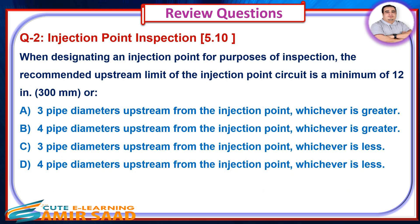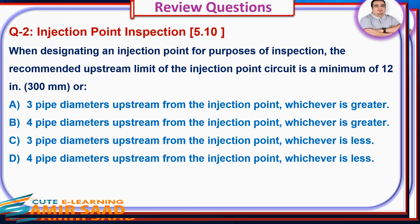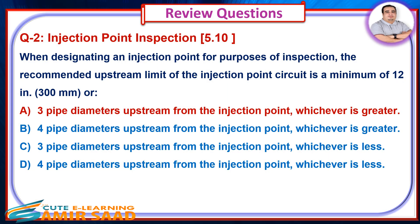Review Question 2: When designating an injection point for purposes of inspection, the recommended upstream limit of the Injection Point Circuit is a minimum of 12 inches or — Answer is A.